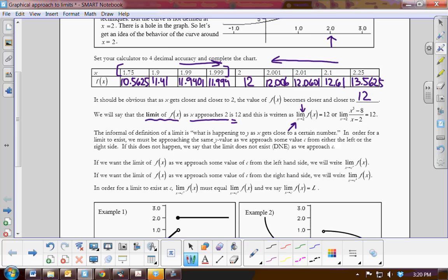Now the informal definition of limit is what is happening to y as x gets closer to a certain number. In order for a limit to exist, we must approach the same y value as we approach some value c from either the left or the right. Now we would say the limit does not exist if we are not approaching the same number from the left and the right.